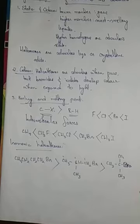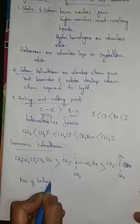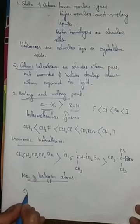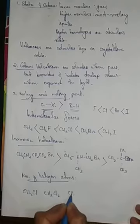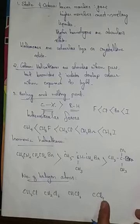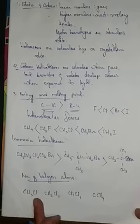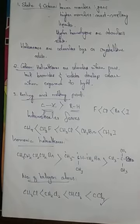Boiling point also increases with the increase in number of halogen atoms. For example, CH₃Cl, CH₂Cl₂, CHCl₃, and CCl₄ — going from 1 to 4 chlorine atoms, the boiling point increases. Therefore carbon tetrachloride CCl₄ will have the highest boiling point.